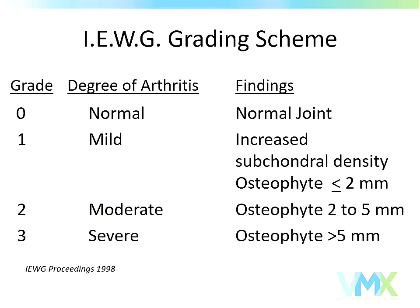The International Elbow Working Group grading scheme: normal elbows are simply reported as normal. Abnormal elbows are graded one through three based on the severity of secondary arthritic change — the osteophyte buildup on the back of the anconeal process is grade one if less than or equal to two millimeters, grade two if two to five millimeters, and grade three if greater than five millimeters. By the time you reach grade three, you have a grossly dysplastic arthritic elbow.